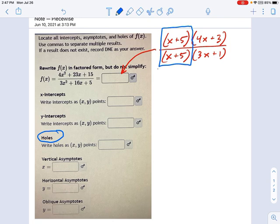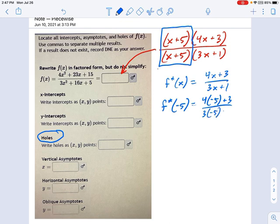And here's the method you go about doing that. You take the simplified form of the equation. My simplified form is just 4x plus 3 over 3x plus 1. And you evaluate that at the location in x of the hole. So what's the location of the hole? We just talked about that. That was negative 5. This becomes 4 times negative 5 plus 3 over 3 times negative 5 plus 1. 4 times negative 5 is negative 20, plus 3, negative 17. 3 times negative 5 is negative 15, plus 1 is negative 14. So the location of the hole is negative 5 in x and 17 over 14 in y.